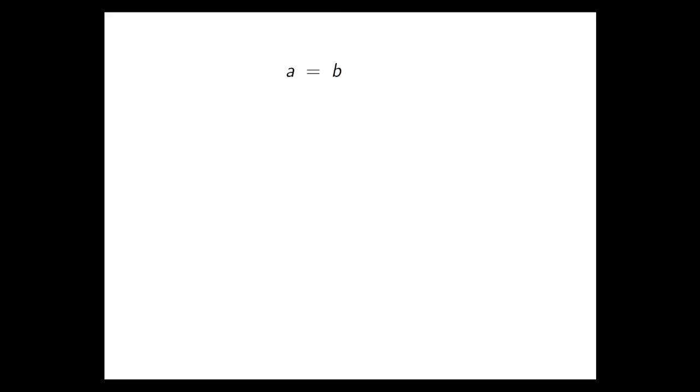So here we have a simple statement, variable a equals variable b. And I'm now going to manipulate that equation using some operations. So firstly, I'm going to multiply both sides by a. So now I have that a squared equals a times b. I'll also subtract b squared from both sides, which produces the equation you see here.